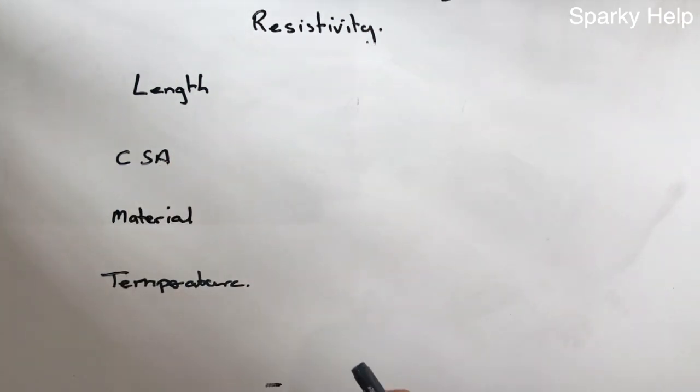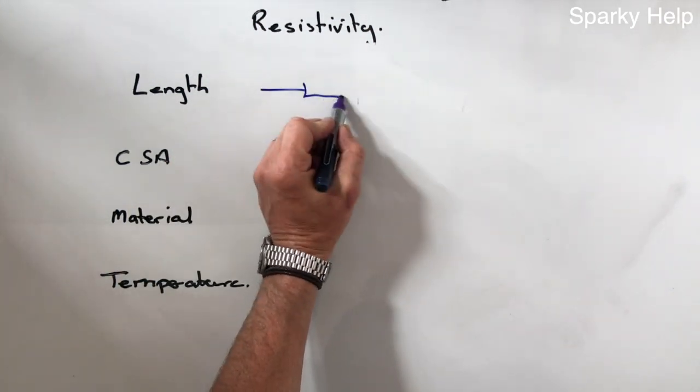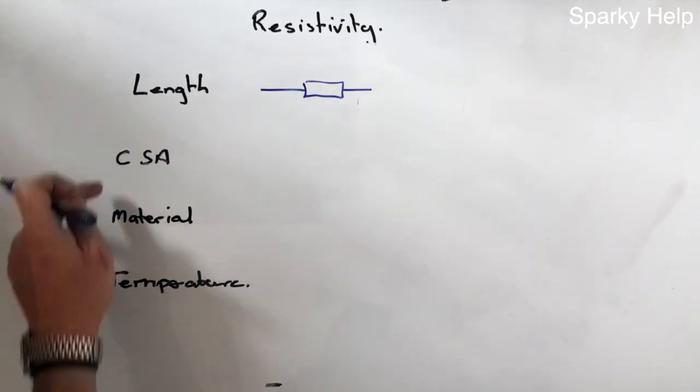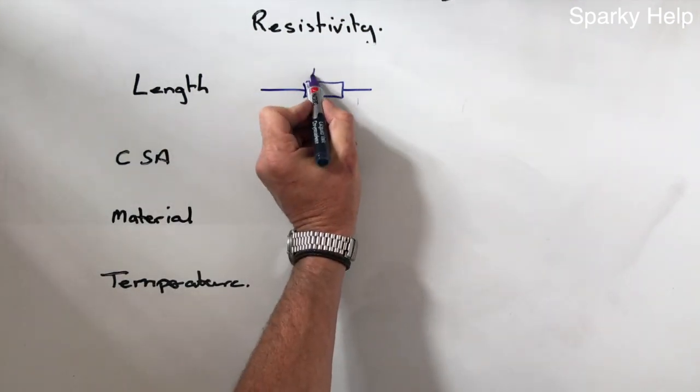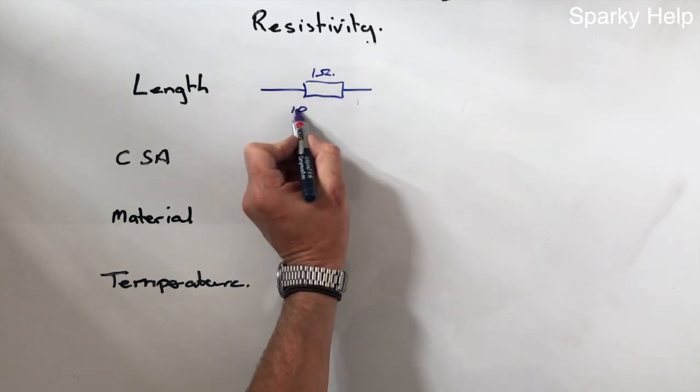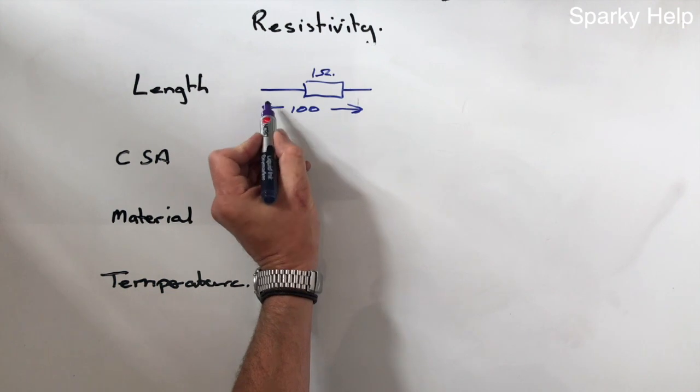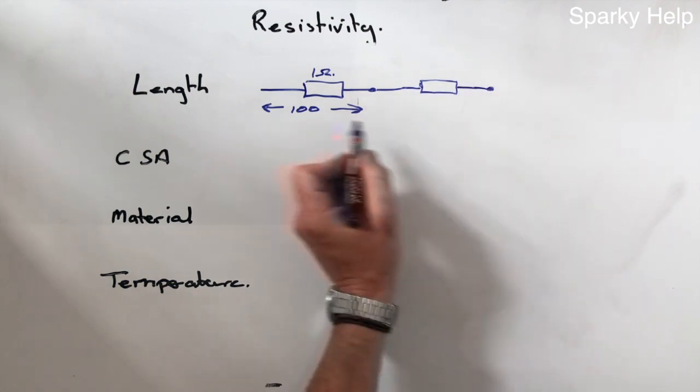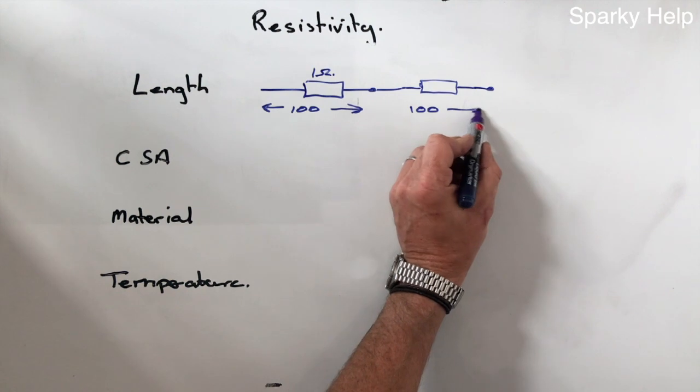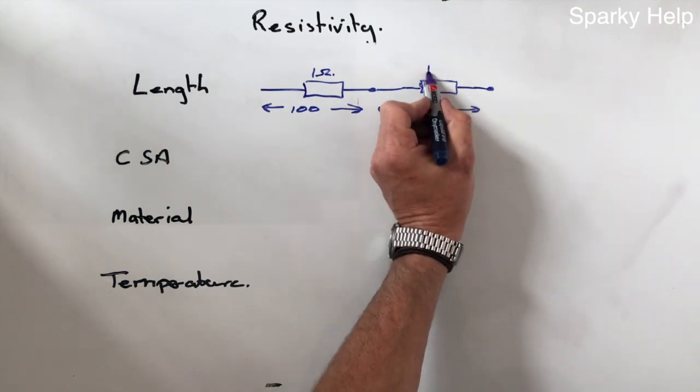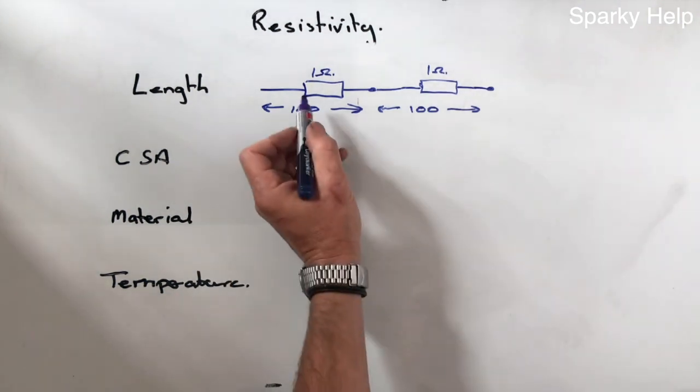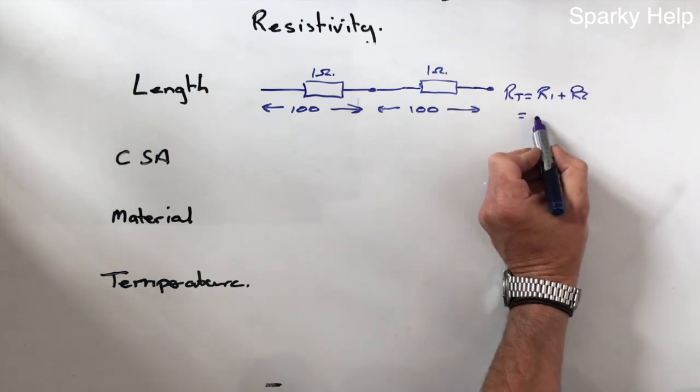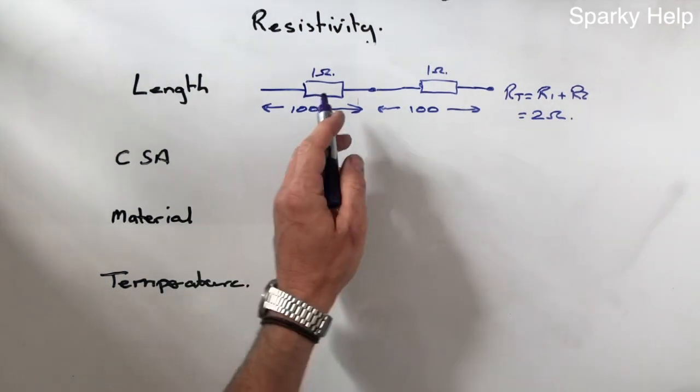In regards to length, we know that if we have a conductor that is 100 meters long, it will have a resistance, providing all of these things stay the same. Let's assume it has 1 ohm, and this relates to 100 meters in length. Then you join it onto another piece of cable, identical in length and size and material, and that also has 1 ohm. We know that RT therefore will be R1 plus R2, given a grand total of, for this example, 2 ohms.